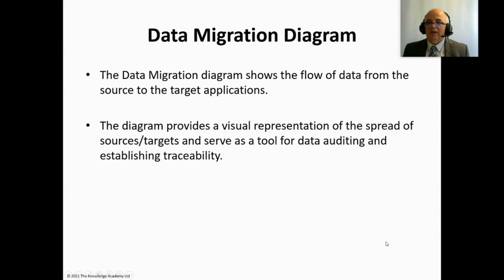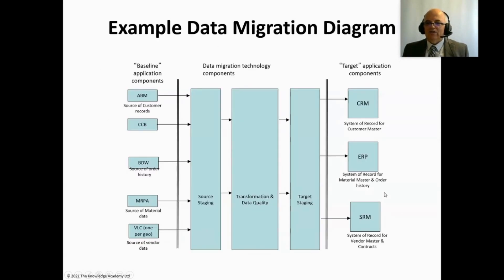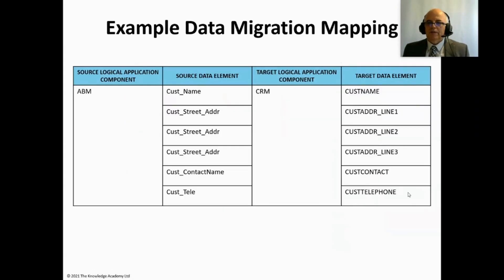The data migration diagram shows the flow of data from source to target applications, provides a visual representation of the spread of sources and targets, and serves as a tool for data auditing and establishing traceability. It could look a bit like that, and we could also see some of the mapping within a matrix.